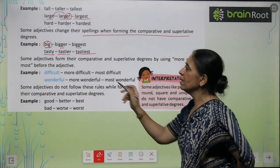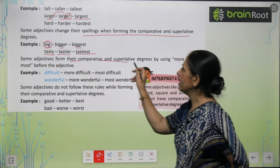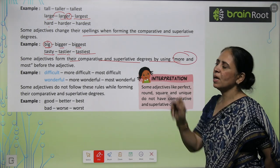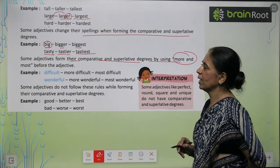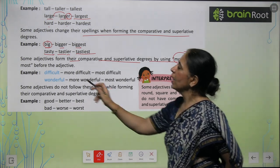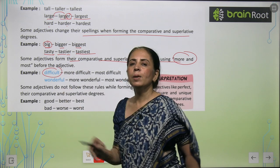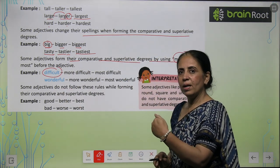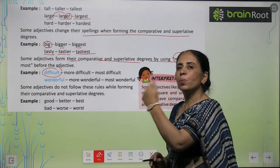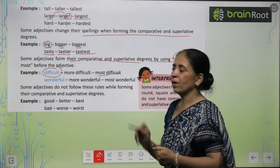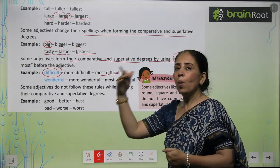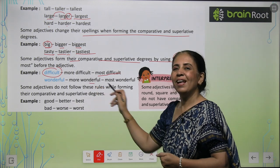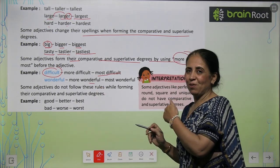Some adjectives form their comparative and superlative degrees by using 'more' and 'most.' For example, 'difficult' becomes 'more difficult' and 'most difficult.' Similarly, 'wonderful' becomes 'more wonderful' and 'most wonderful.'